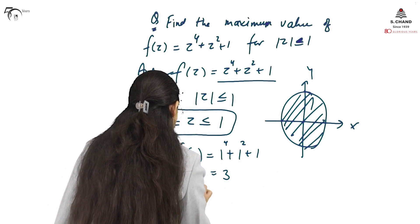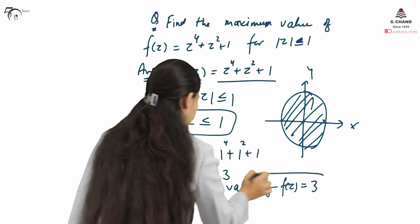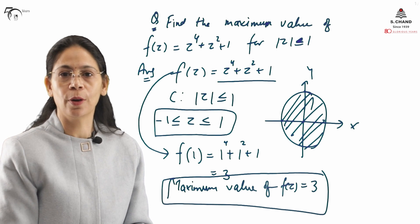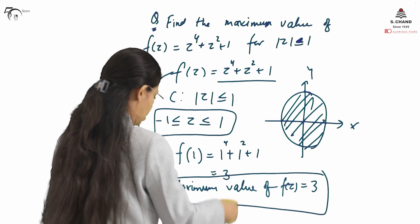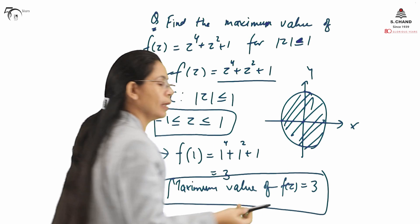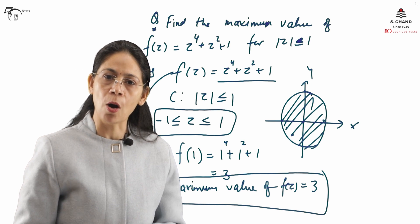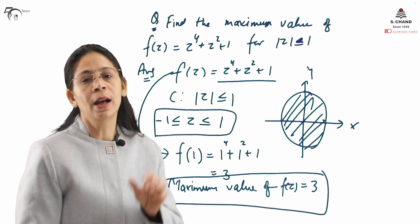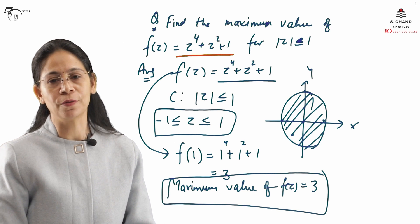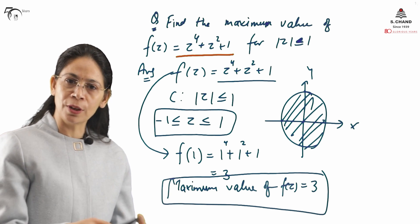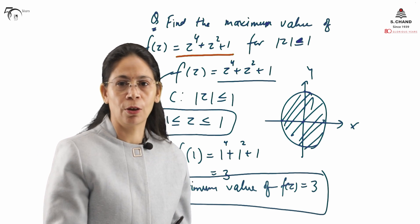Therefore, the maximum value of F(z) on the curve mod of z ≤ 1 is 3. If the curve is changed — for example, mod of z ≤ 2 — then the maximum value will also change accordingly. F(z) is not a constant, so we can find the maximum value by applying the Maximum Modulus Theorem. Similarly, the Minimum Modulus Theorem can be applied in the same lines to find the minimum value of the function.